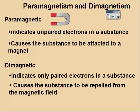Last thing in this video is paramagnetism and diamagnetism. Paramagnetism indicates unpaired electrons in the substance. When you have unpaired electrons, it causes it to be weakly attracted to a magnet. Diamagnetic indicates only paired electrons are in the substance. And this is going to cause the substance to be repelled from the magnetic field.